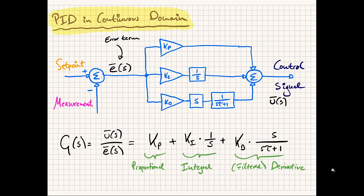Let's have a look at the continuous-time version of the PID controller in the S or Laplace domain. This is the form given in the majority of control theory textbooks. The controller has two inputs: the setpoint (or reference) and the measurement, which is fed back via sensor. If we subtract the measurement from the setpoint, we get the error term, typically denoted E. This error signal goes through three paths. The first is the proportional path: the error term is simply multiplied by a constant kp, the proportional gain.